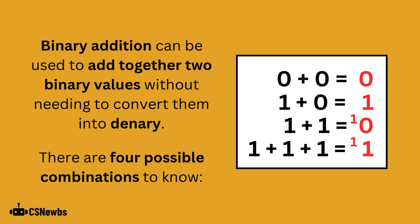1 plus 1 is obviously 2, but in binary this is represented as 1, 0. The 1 is a remainder, known as a carry, and then the 0 is the normal number. This will make more sense in the example shortly.